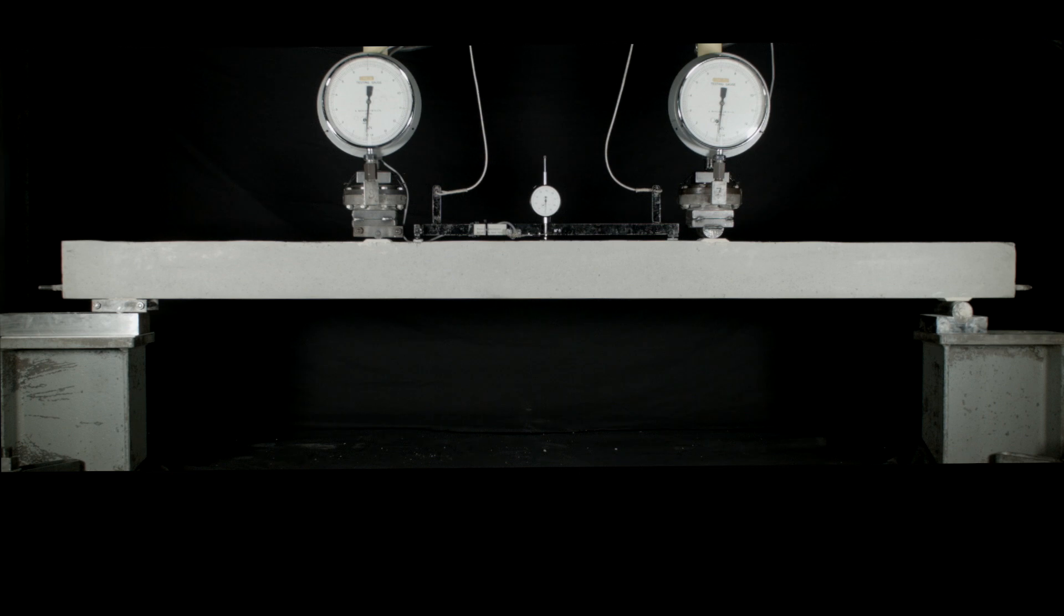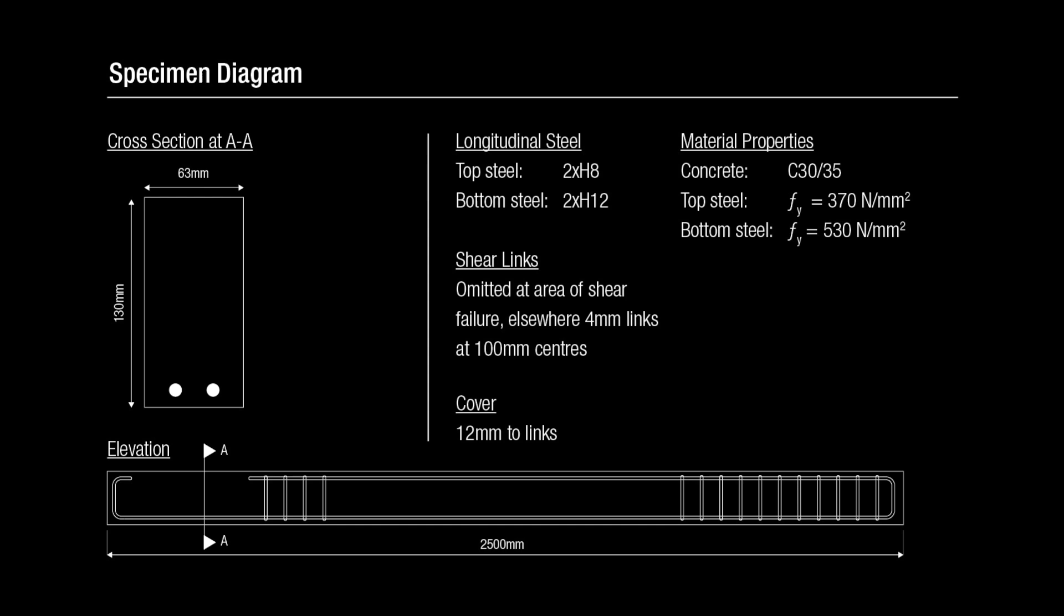This video shows a reinforced concrete beam containing no shear links being tested in bending. The specimen is made from concrete containing regular Portland cement. The rebar is regular reinforcing steel.